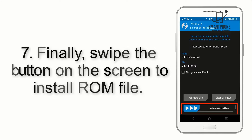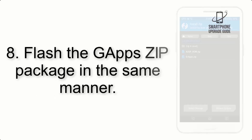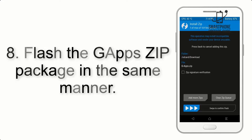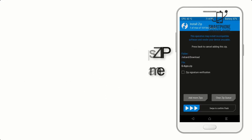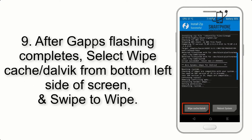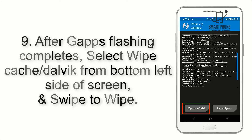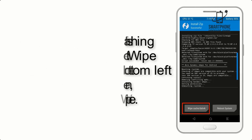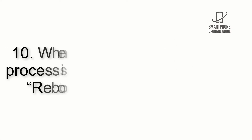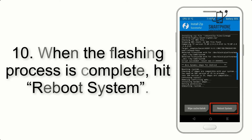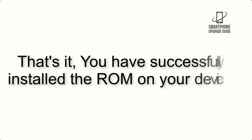Step 7: Swipe the button on the screen to install the ROM file. Step 8: Flash the GApps zip package in the same manner. Step 9: After GApps flashing completes, select Wipe Cache and Dalvik from the bottom left side of the screen and swipe to wipe. Step 10: When the flashing process is complete, hit Reboot System. That's it — you have successfully installed the ROM on your device.